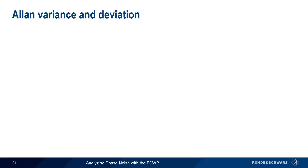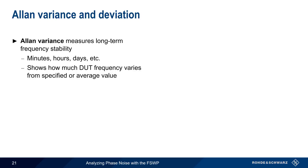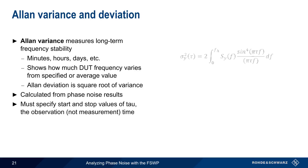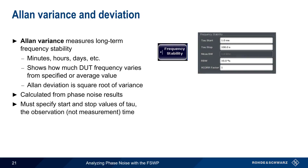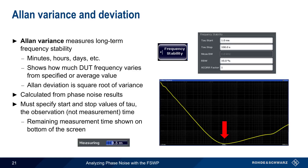The final measurement we'll look at is Allan Variance or Allan Deviation. Unlike phase noise, which is a measure of short-term frequency stability, Allan Variance measures long-term frequency stability — with long-term being on the order of minutes, hours, days, etc. Allan Variance shows how much the DUT frequency varies from the specified or average value. Note that Allan Deviation is simply the square root of Allan Variance. The FSWP calculates it directly from the phase noise results. The only thing you need to specify are the start and stop values of tau, the observation time. Allan Variance measurements can take a long time to run, so the remaining time indicator at the bottom of the screen may be helpful.